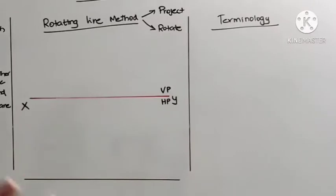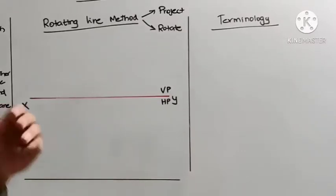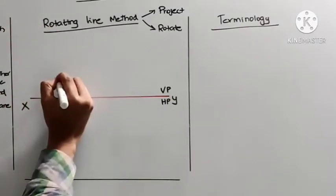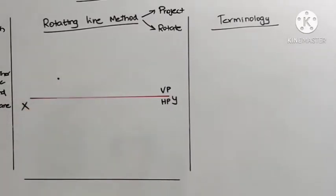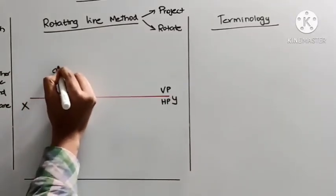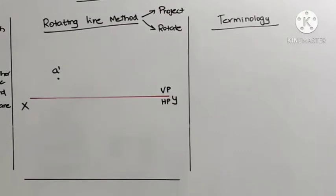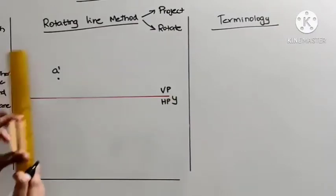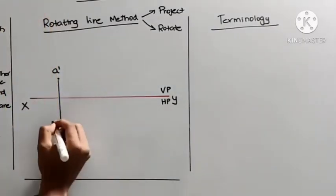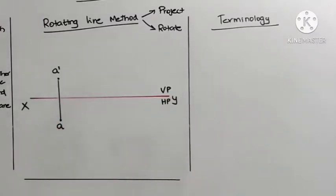Let's assume that one end of the straight line is some distance above the horizontal plane, so that end will be somewhere here in the front view. I am going to name this as A' (A dash). The corresponding end is some distance in front of VP, so that in-front-of distance will be visible in the top view. I am going to mark that distance and name it as small 't'.